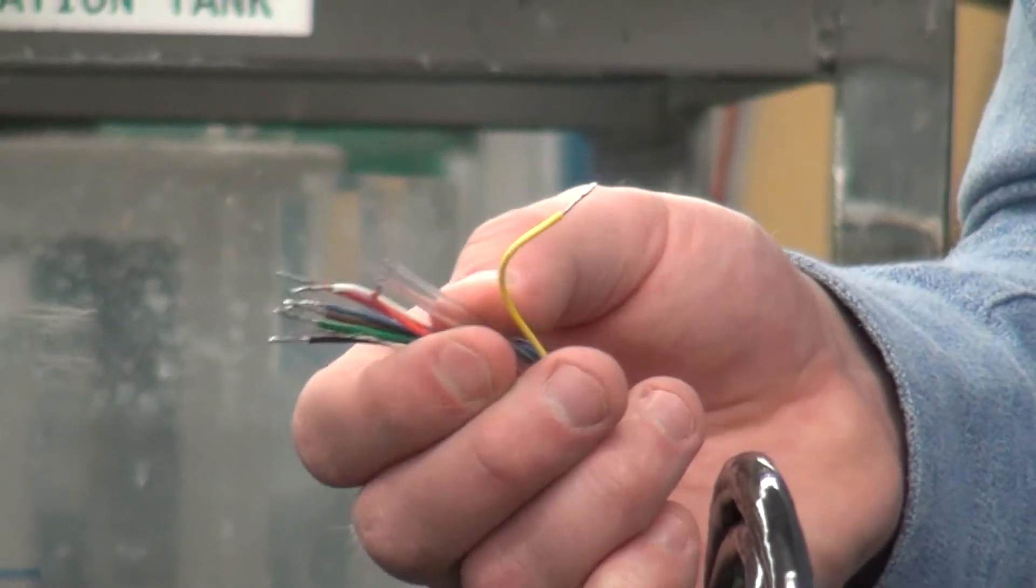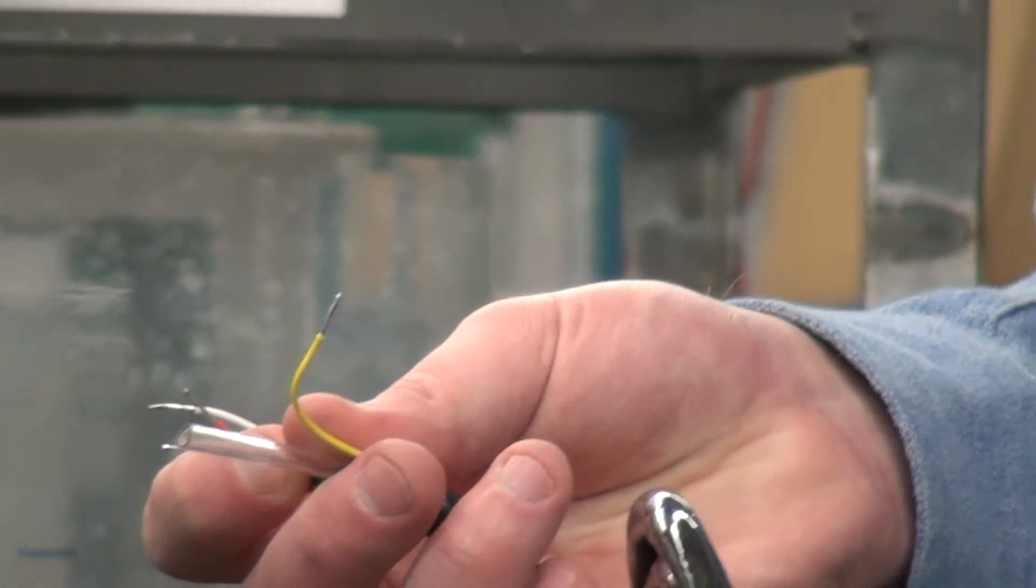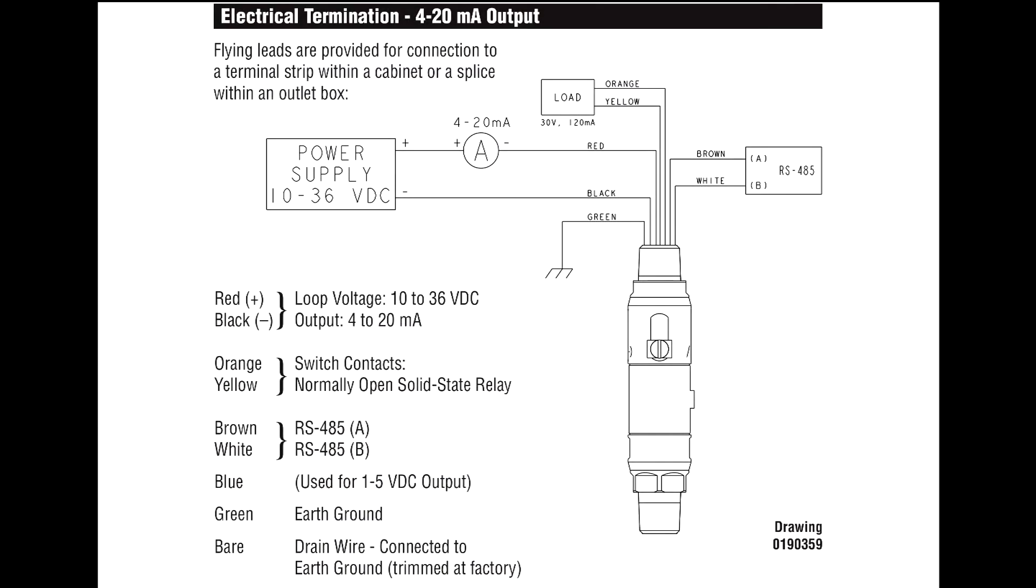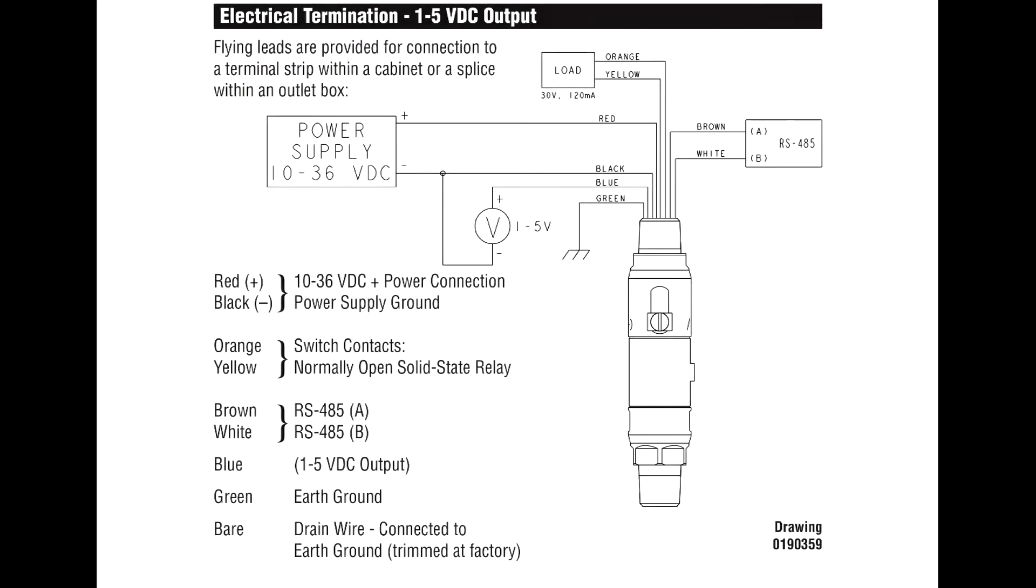The 815LT comes with eight separate wires. How you wire it actually determines how you use it. If you want to use a 4 to 20 milliamp output signal as well as a HART output, it is just a matter of which wires you choose to use at the time.